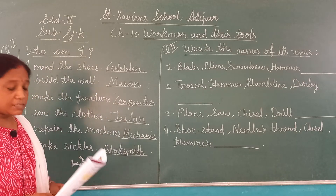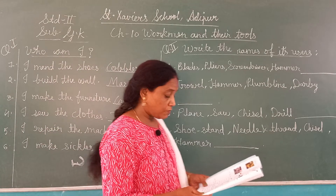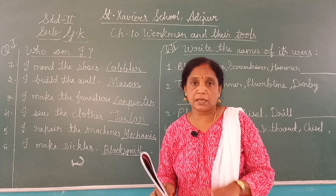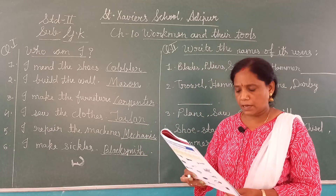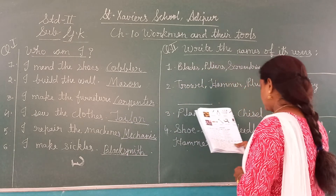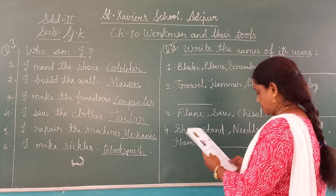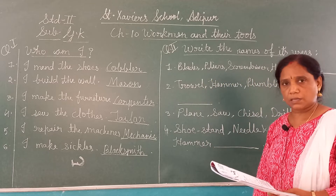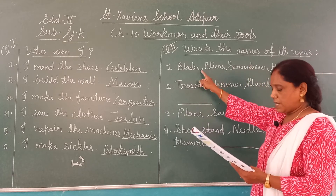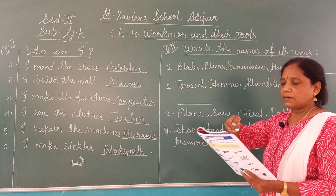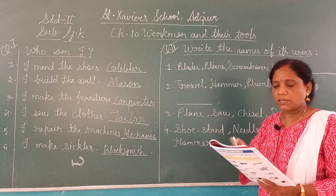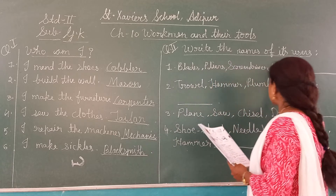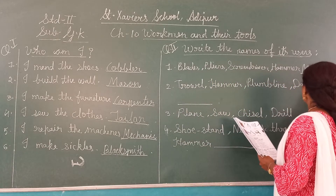Now let us move to question number two: write the names of the users. Means, for the tools listed below, you have to write which workman uses them. The first set is: blades, pliers, screwdriver, hammer — who uses these? These tools are used to repair machines, so the answer is Mechanic.